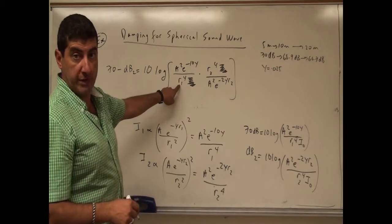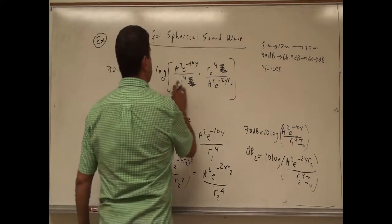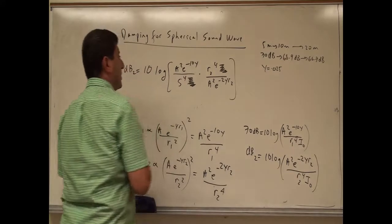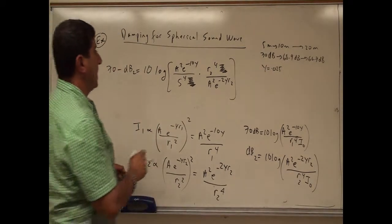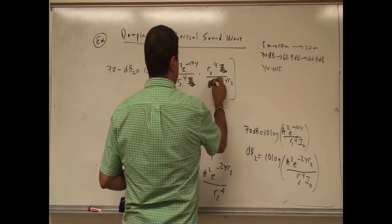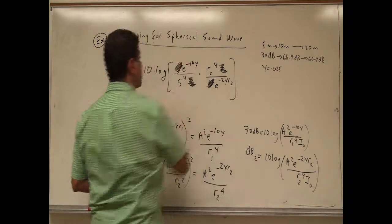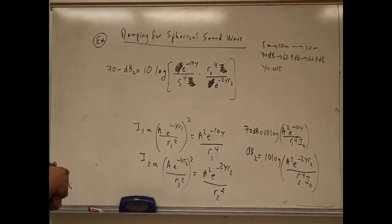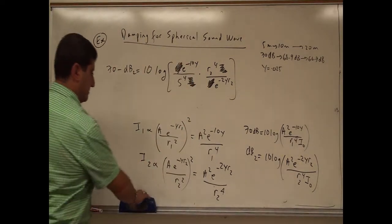Then R1 is going to be the 5 meters. So that's going to be the 5 meters to the power of 4. The A squared is also going to cancel, so the amplitude of the wave doesn't matter. So then it's going to end up looking like that.